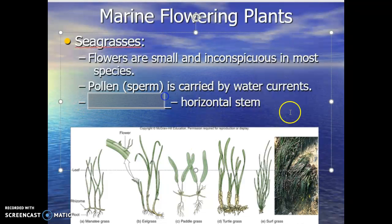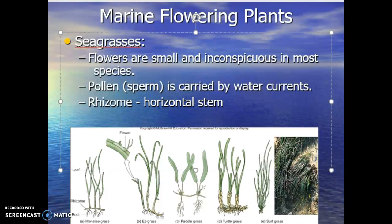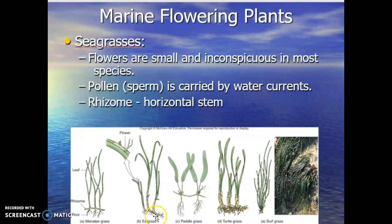Seagrasses can also reproduce asexually with a structure known as a rhizome — an underground horizontal stem that runs beneath the water and sand. From the rhizome, new plants and new shoots pop up. Examples include manatee grass, eel grass, paddle grass, turtle grass, and surf grass. That big thick stem underground is the rhizome on each of these types of grasses, and the leaves that shoot up all come from that original rhizome. It's a method of asexual reproduction in the seagrasses.